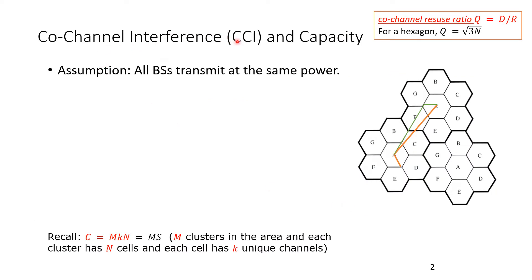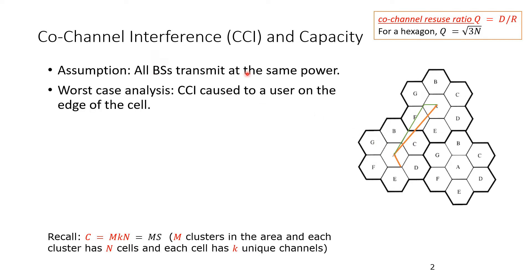Now let's look at co-channel interference and capacity. For co-channel interference, remember that in the cellular system we repeat the same set of frequencies — cells labeled A or E use the same set of frequencies. We assume that all base stations transmit at the same power, and we focus on the worst case scenario.